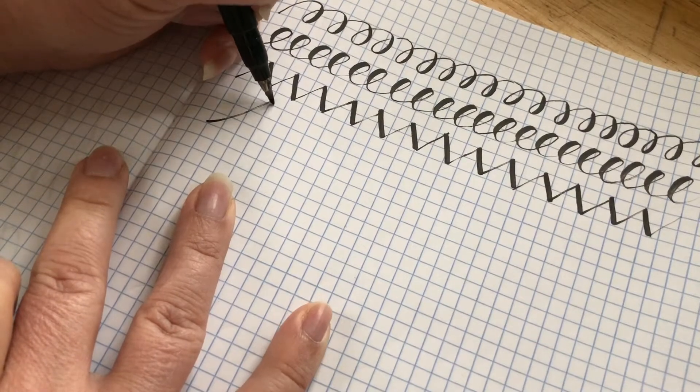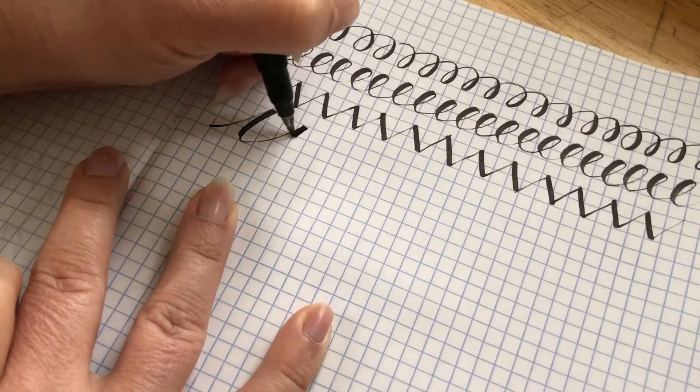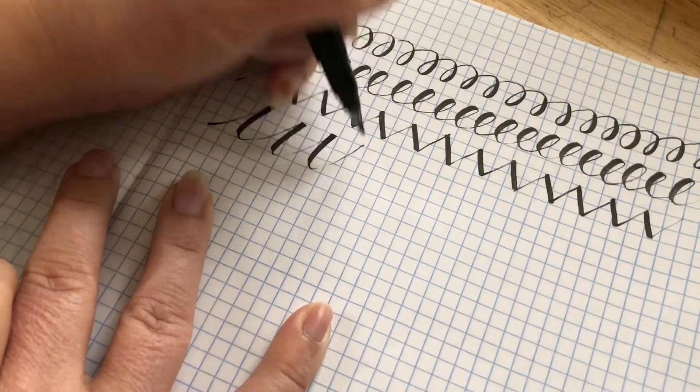The next stroke I practice is an entry ligature or upturn and then the heavier down stroke. These look a little like I's or uncrossed T's, don't they?